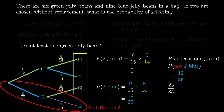That is the same answer you'd get by adding up all three yellow outcomes — multiplying green-green, green-blue, and blue-green separately and adding them up — but using the complement is the easiest way. When a question asks for at least one, it's most often easiest to find the probability of getting none at all and then do one minus that.